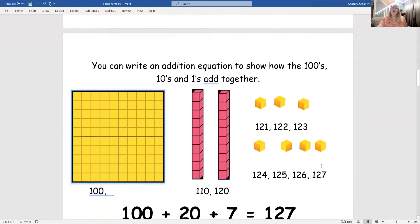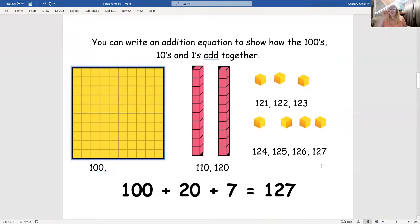You can also write an addition equation to show how the hundreds, tens, and ones add together. So we can say 100 plus 20 plus 7 equals 127. We can call this equation expanded notation. This is called the expanded notation for the three-digit number, 127.